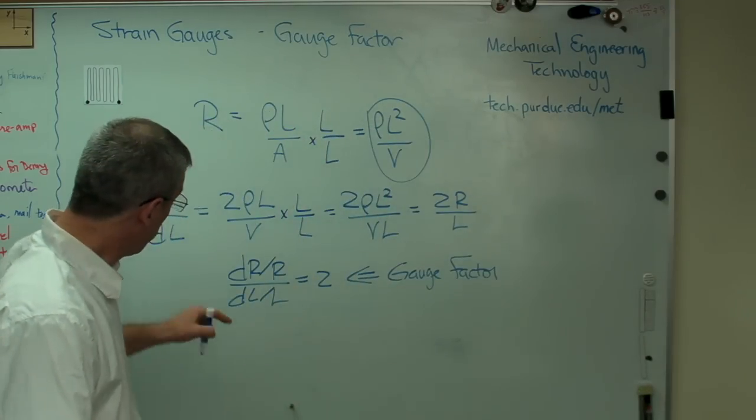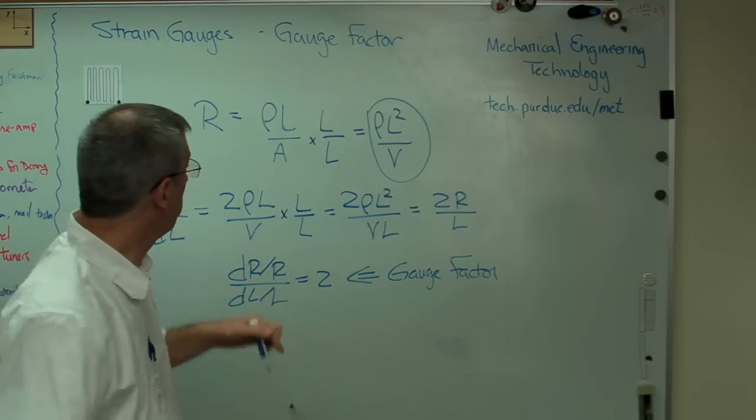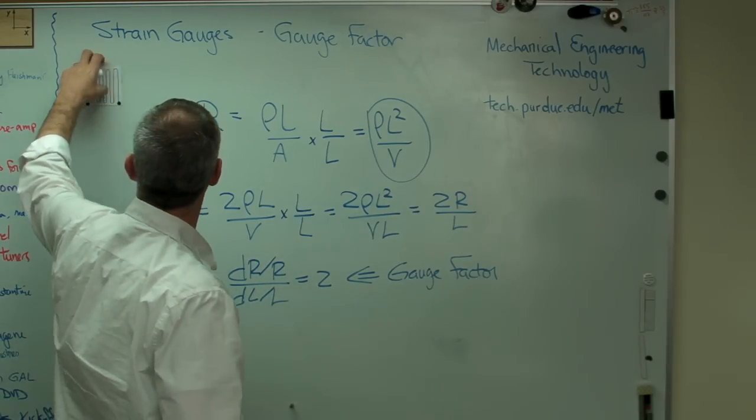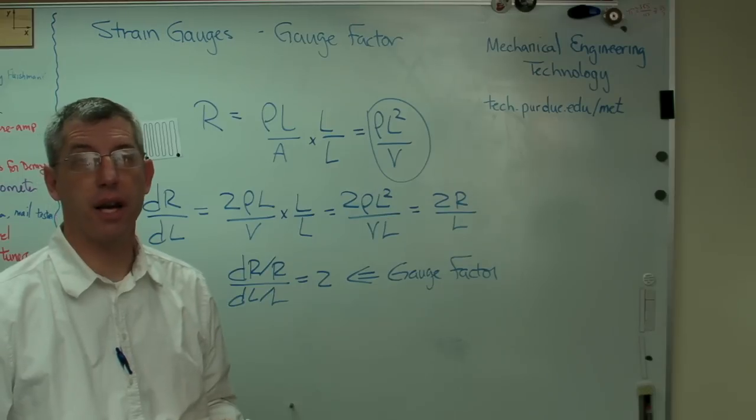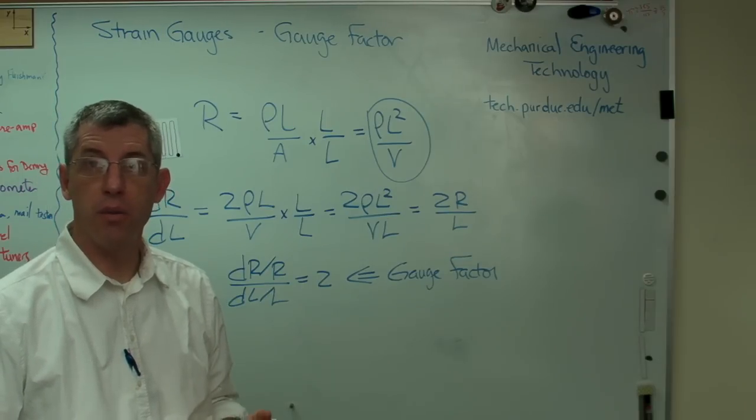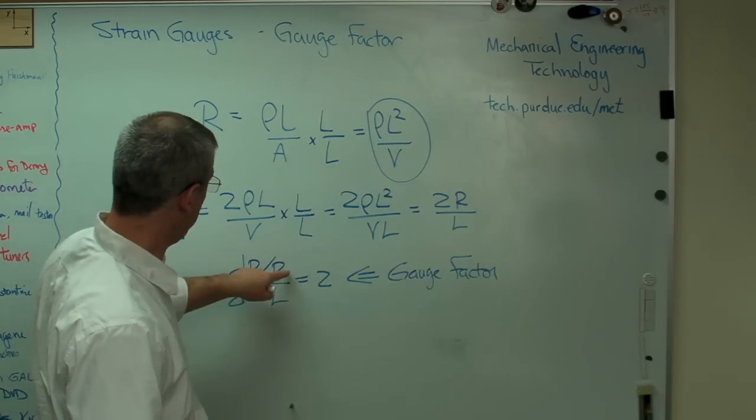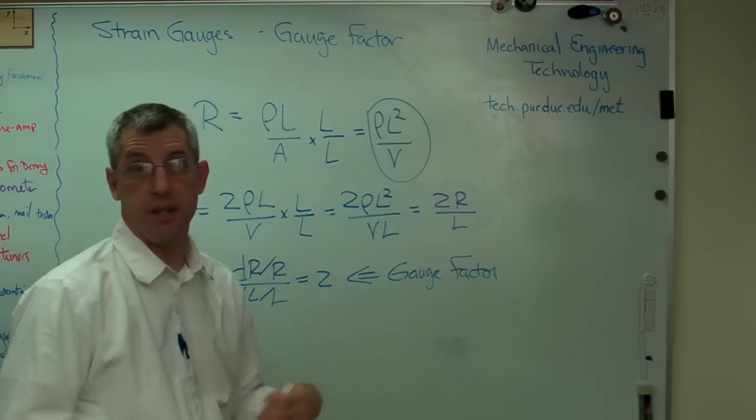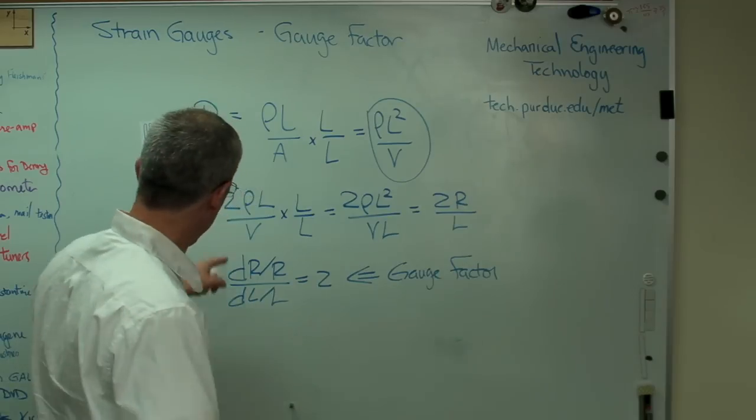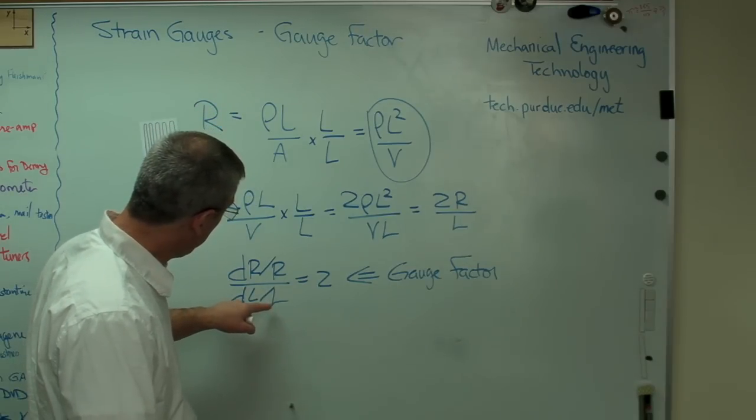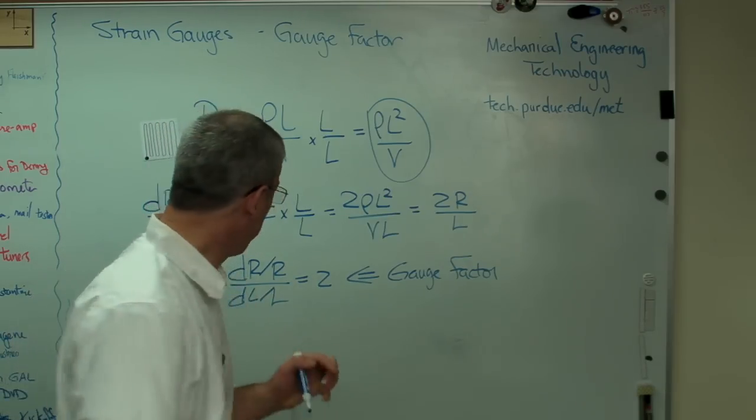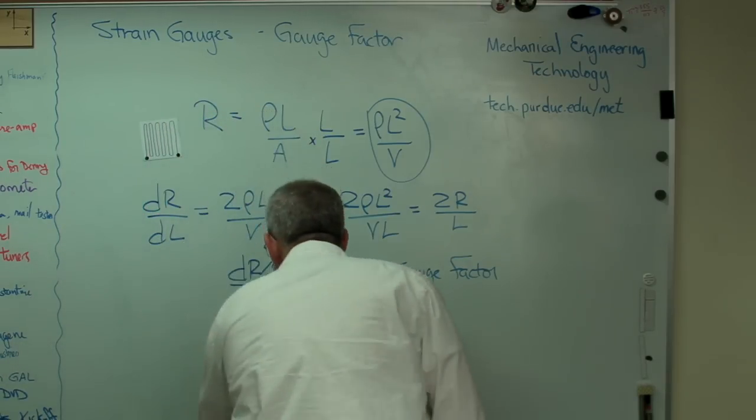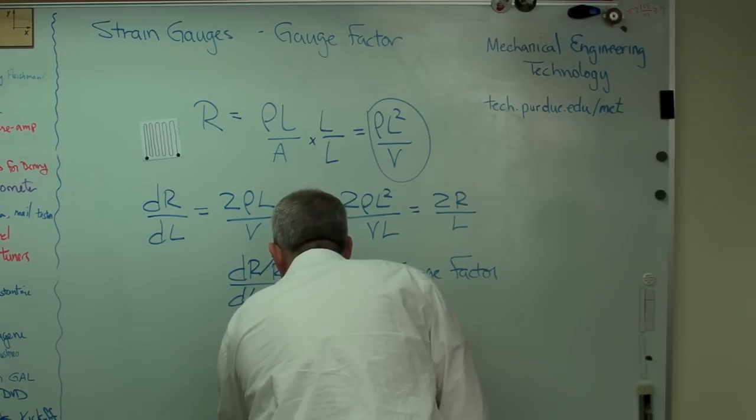So, DR over R. Well, I already told you that the gauges themselves usually have a resistance, always have a resistance, as far as I know, of 120 ohms or 350 ohms. So that's just a number. Change in resistance, that's what we're going to measure. So we're going to know that. And DL over L. Change in length over length. I think we've seen that before. Isn't that strain? So you can also write this.